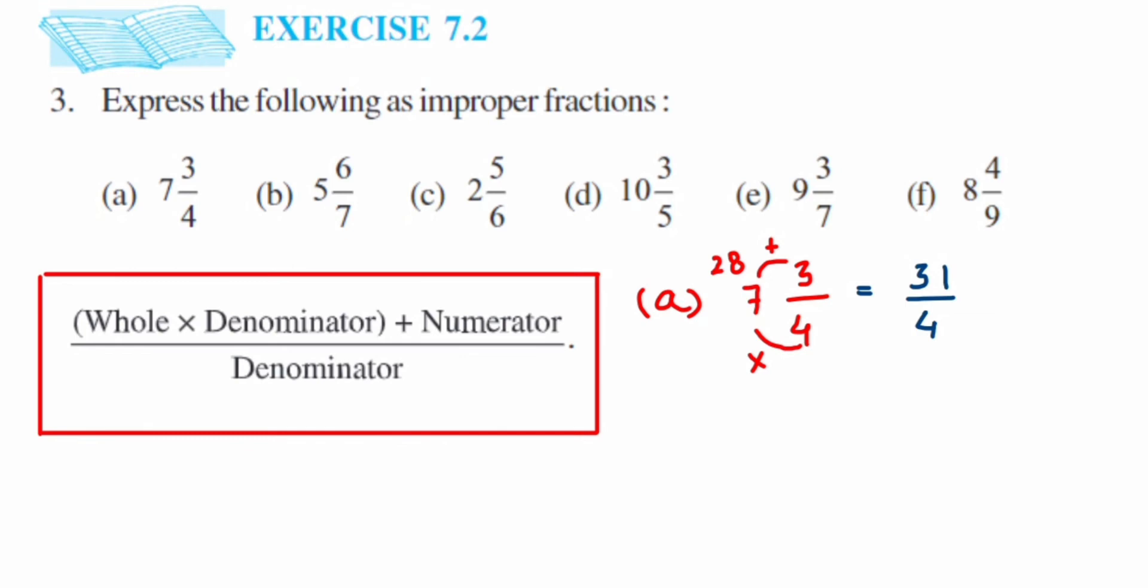The next question, b, we have 5 6/7. Same thing: multiply 7 and 5 first—multiplication and then addition. When you multiply 5 times 7 or 7 times 5, it's 35. Then add plus 6, which is going to give you 41. So this is equal to 41/7.